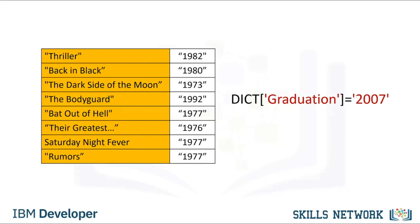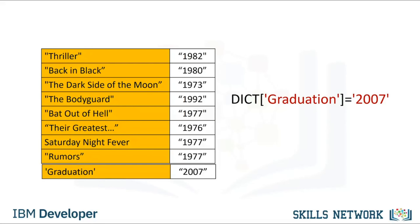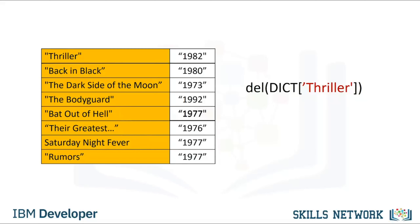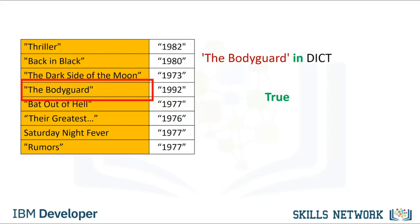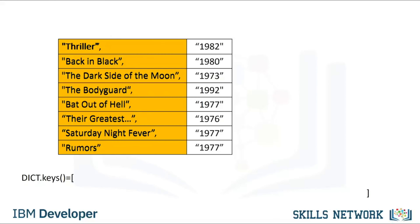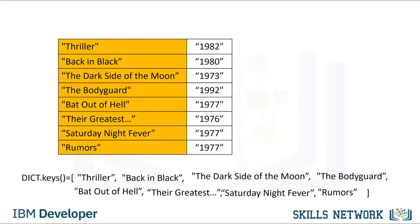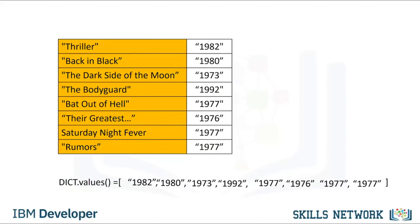We can add a new entry to the dictionary — this will add the value 2007 with a new key called graduation. We can delete an entry — this gets rid of the key thriller and its value. We can verify if an element is in the dictionary using the in command, which checks the keys. If they are in the dictionary, they return true; otherwise we get false. In order to see all the keys in a dictionary, we can use the method keys. Similarly, we can obtain the values using the method values. Check out the labs for more examples.